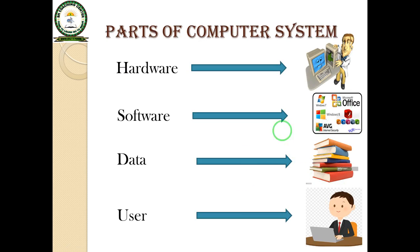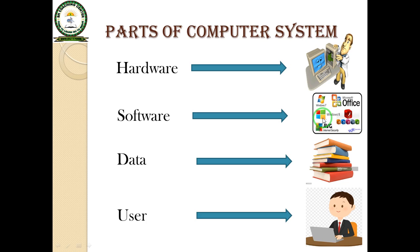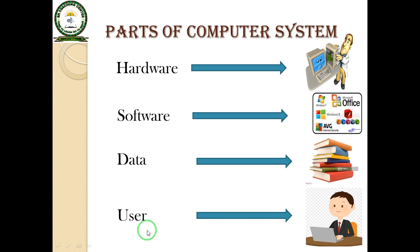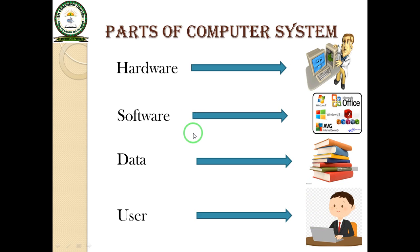Hardware refers to all parts of the computer which we can see and also touch. Software refers to all programs of the computer which we can see but cannot touch, and software increases the efficiency of the computer and is able to perform any functions. Graphics and figures are called data. A person who operates or uses the computer is known as a user. These are the four important components of the computer system.